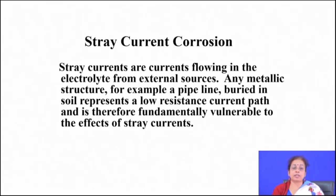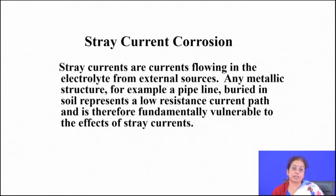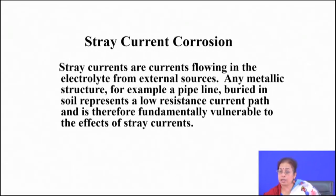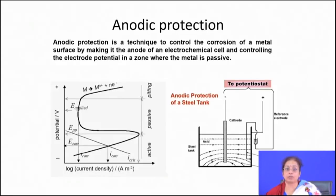One important problem associated with cathodic protection is stray currents in the electrolyte from external sources. When cathodic protection is used, especially below ground connected to DC sources, any other corroding species nearby get corroded away, causing further trouble. You have to be very careful about structures built next to cathodically protected structures so that they cannot corrode.